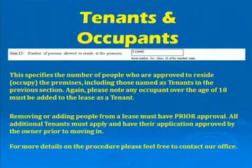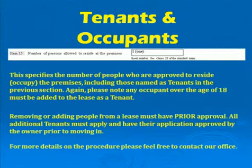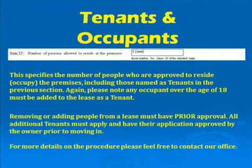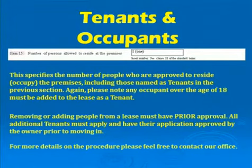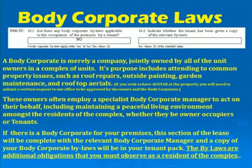The tenants or occupants section specifies the number of people approved to reside at the premises, including those named as tenants. Please note that any occupant over the age of 18 must be added to the lease as a tenant. Removing or adding people from the lease must have prior approval. All additional tenants must apply and have their application approved by the owner prior to moving in. For more details on the procedure, contact us anytime.